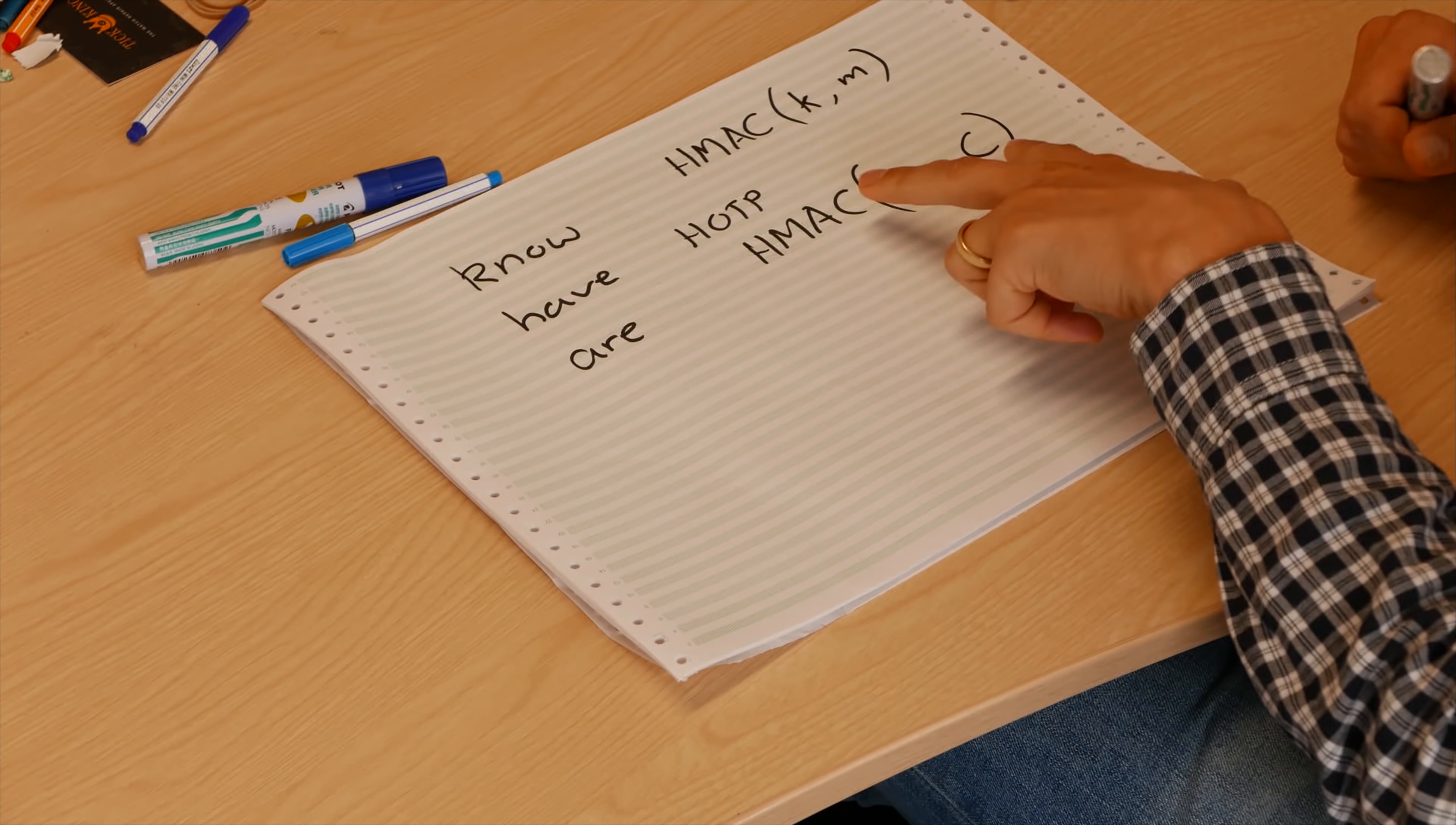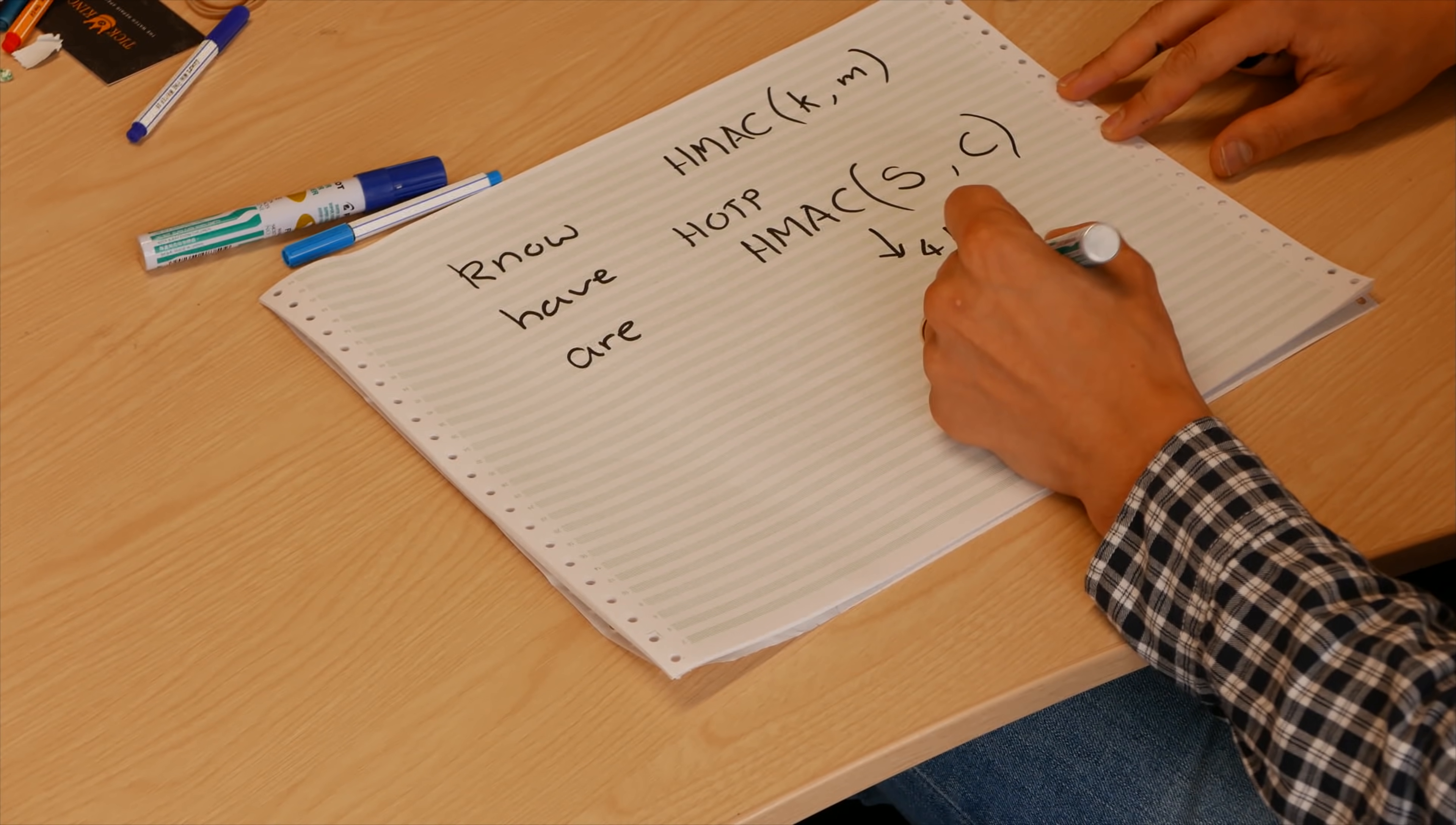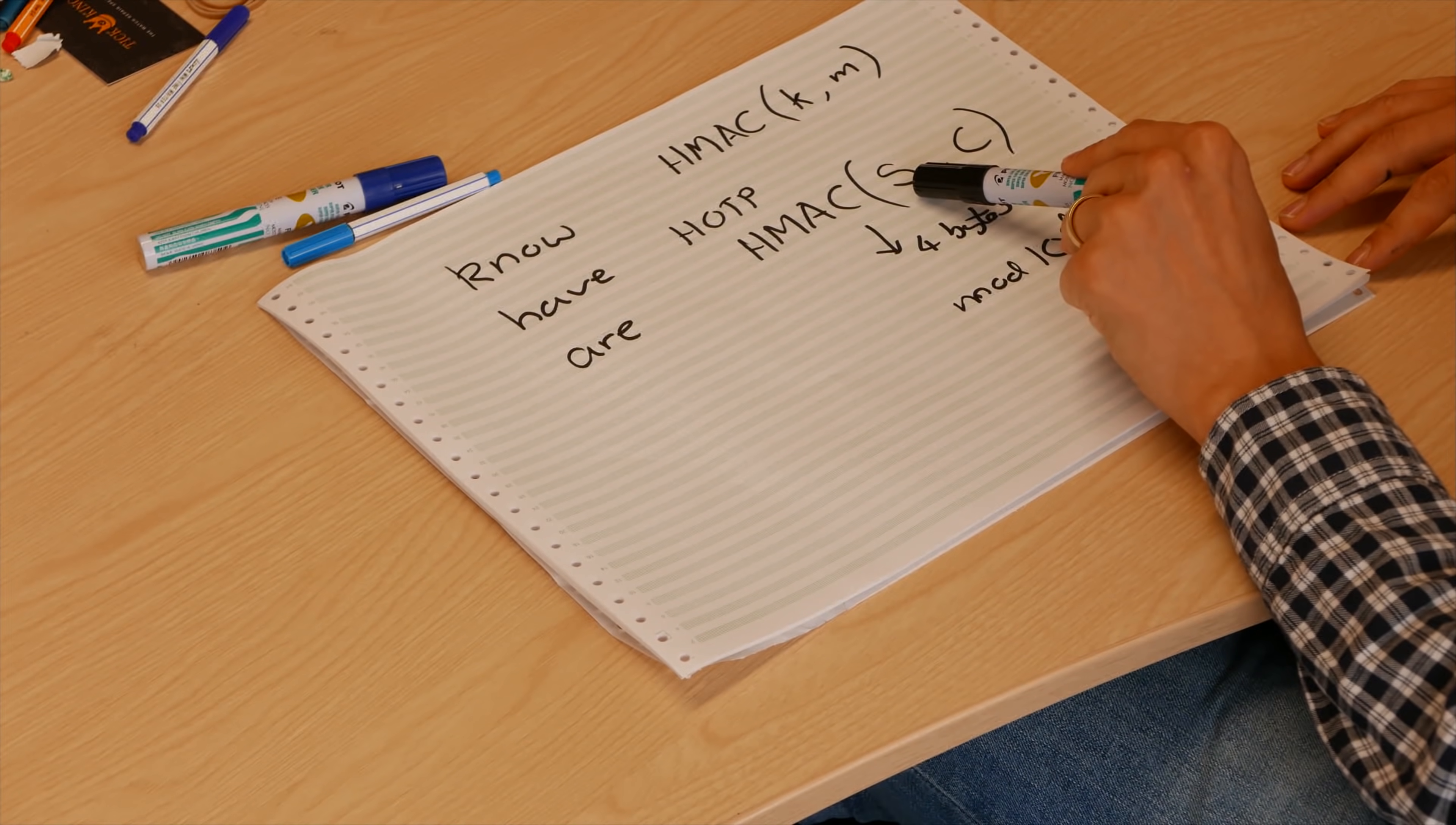The way we do that is we take certain bytes from the HMAC. For an HMAC of a SHA-1 it's going to be 160 bits, so we take four bytes from here. We calculate those four bytes modulo 10 to the D, where D is how many decimals we want. On my Google Authenticator I was using six, so your authentication app would have a certain number of digits it outputs. What would happen is the server when you log in will perform the exact same calculation because they know the two things that we do: they know the secret key and they know the counter.